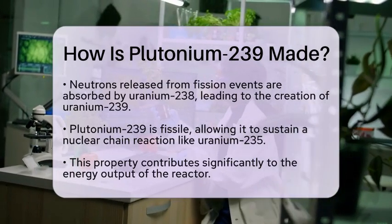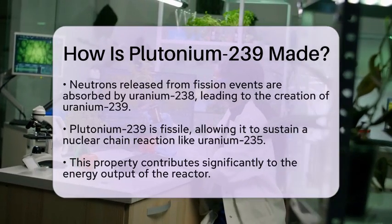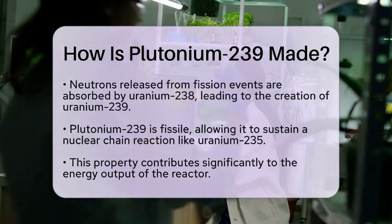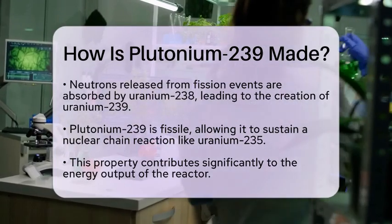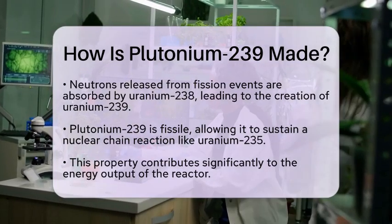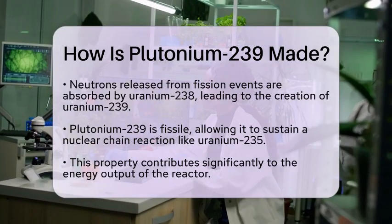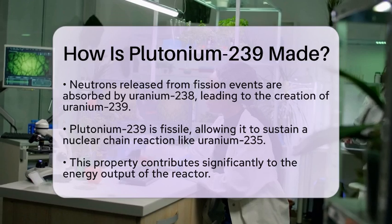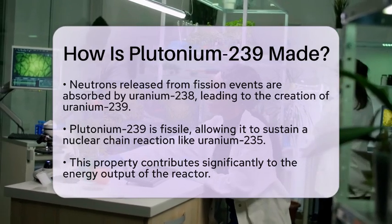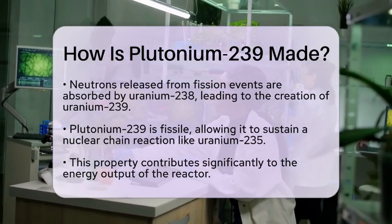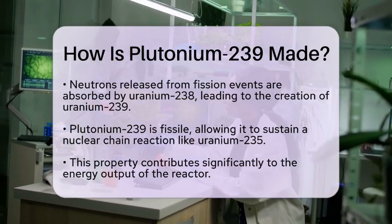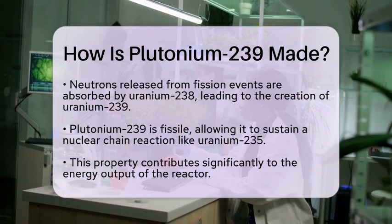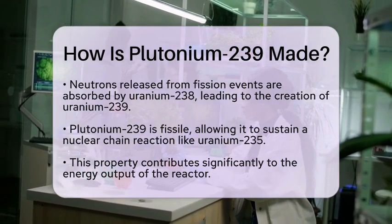The Plutonium-239 produced is quite important. It is fissile, meaning it can sustain a nuclear chain reaction similar to Uranium-235. This characteristic allows it to contribute significantly to the reactor's energy output.